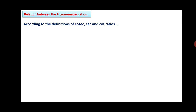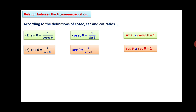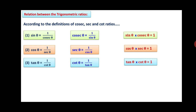Now we will see the relations between the ratios. According to definitions: sin θ = 1 / cosec θ, or equivalently cosec θ = 1 / sin θ, and their product is always 1. Similarly, cos θ = 1 / sec θ, or sec θ = 1 / cos θ, and their product is 1. Also, tan θ = 1 / cot θ, or cot θ = 1 / tan θ, and their product is 1.